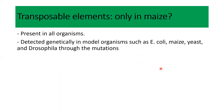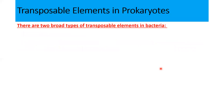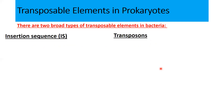One may ask whether transposable elements are present only in maize. The answer is no — transposable elements are present in almost all organisms. They have been detected genetically in E. coli, maize, yeast, Drosophila, and other model organisms. In prokaryotes, there are two broad categories of transposable elements: insertion sequences and transposons.